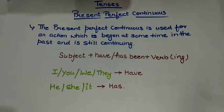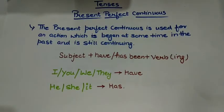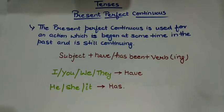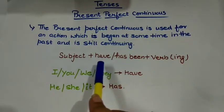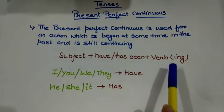Present perfect continuous tense is basically a mixture, or we can say a combination, of present perfect tense and present continuous tense. This tense is used for an action which began at some time in the past but that work is still continuing — the work is still going on.